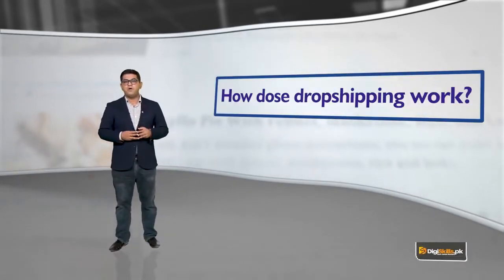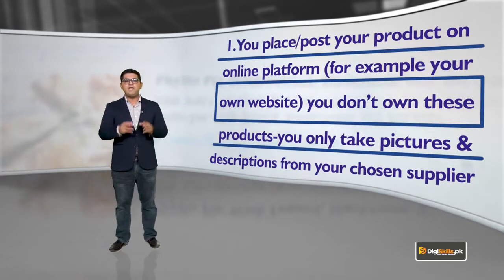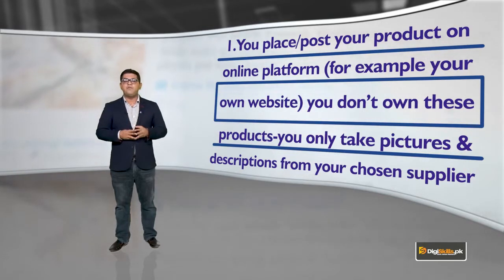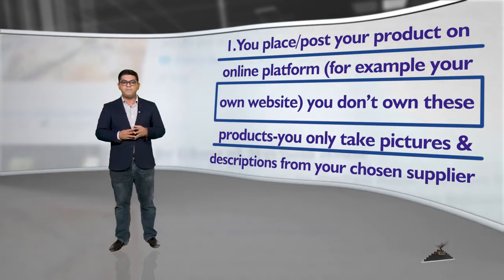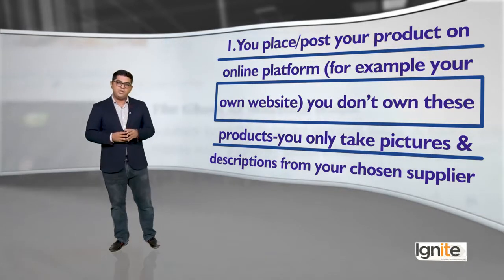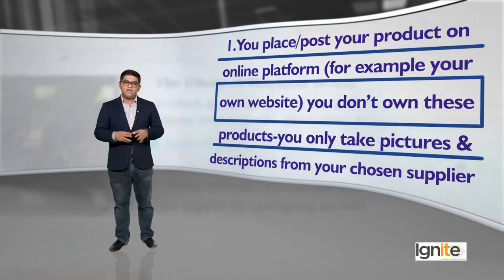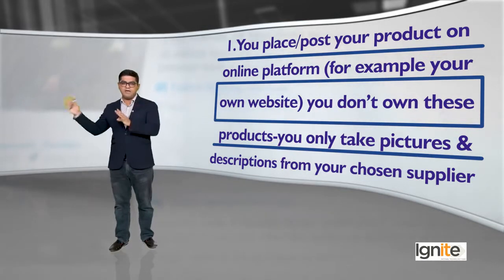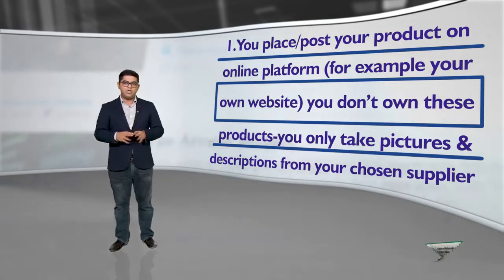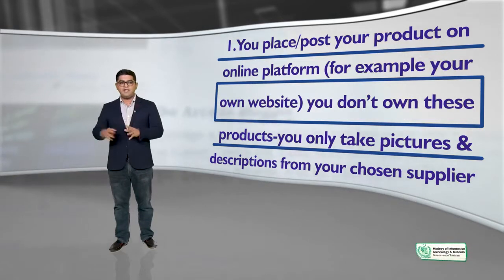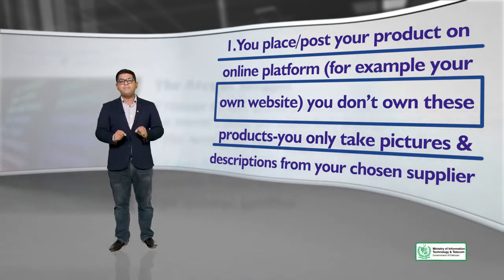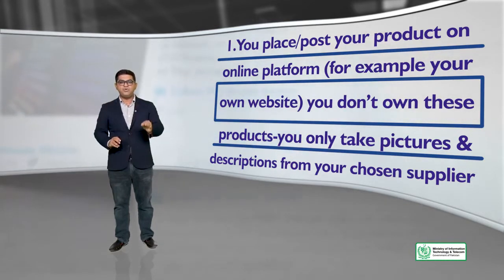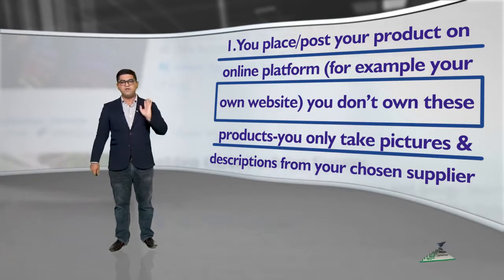How does dropshipping work? Number one: you post your product on an online platform. For example, joh aap ki WordPress ki website hai, wahan aap ek products ki inventory place karenge. You don't own these products — yeh products aap own nahi karte. Yeh ho sakta hai China mein koi vendor baitha ho joh in products ko bana raha ho. Toh these products are made by that vendor. Aap apni marzi se ek supplier choose karenge aur ja ke ek product ki taswir aur uski description daal denge.